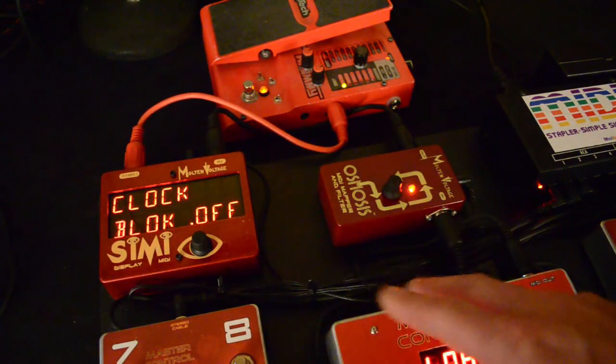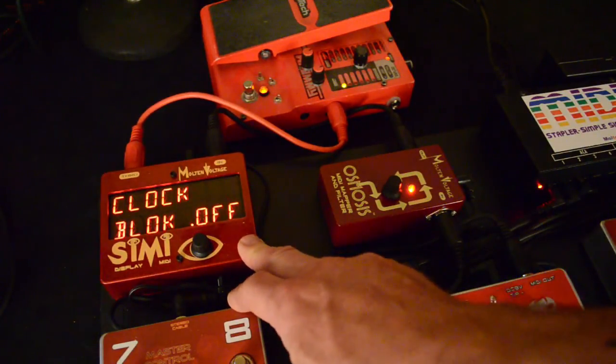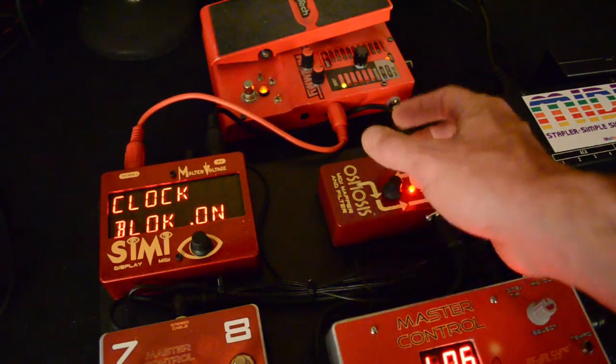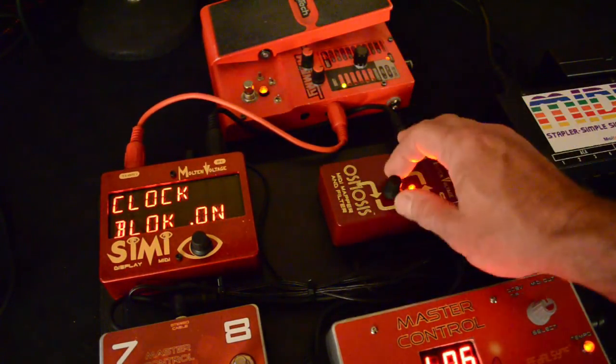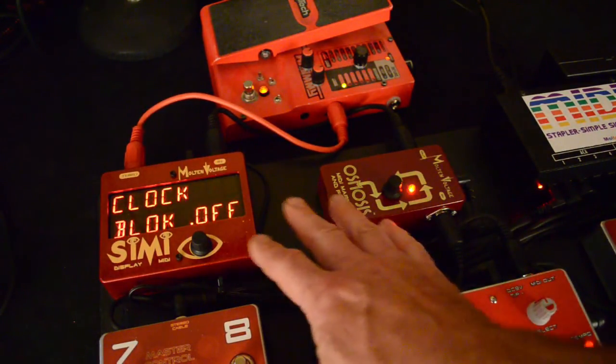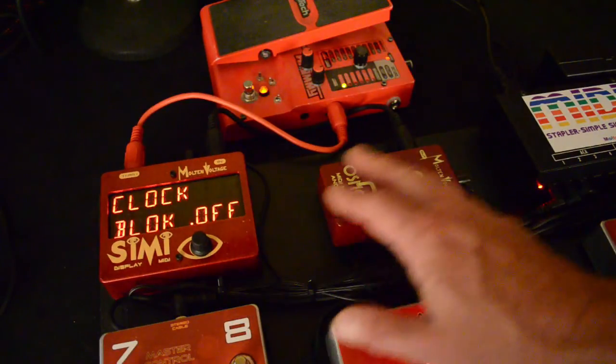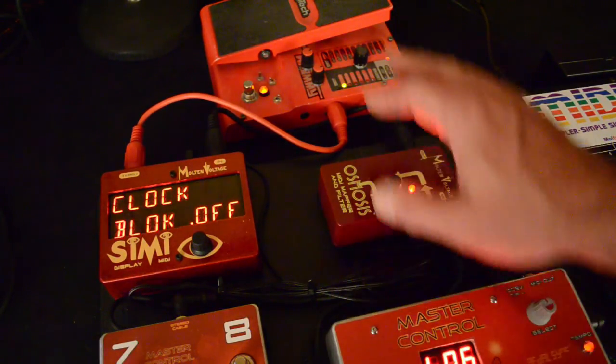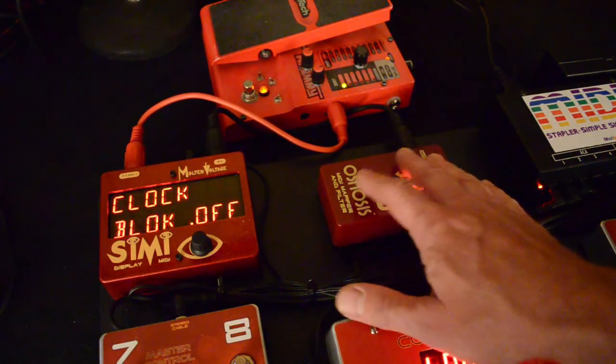Clock Block Off, and that will block, if it's on, it'll block incoming MIDI clock, won't let it pass through. If it's Off, you can still block it for individual programs. So the default is to have it Off. So the clock will pass through, and then it can be turned on or off for each program.